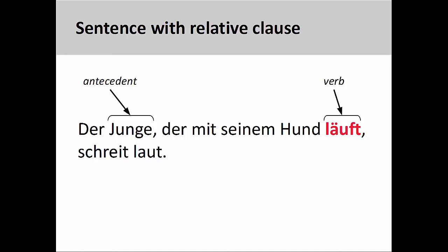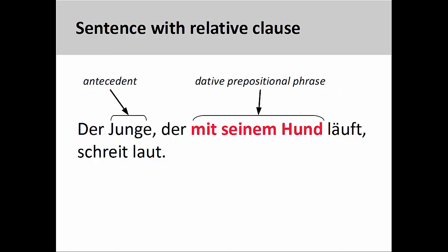When creating the extended modifier, we will change this verb into a present participle before inserting it into the extended modifier. As we will see in the coming slides, this step will be performed first. Also in the relative clause is the dative preposition 'mit,' with, followed by the object of this preposition, 'seinem Hund,' his dog. Both the preposition and its object form a dative prepositional phrase. These secondary modifiers will be inserted into the extended modifier after we insert the present participle.